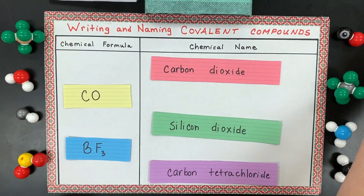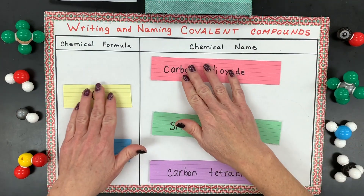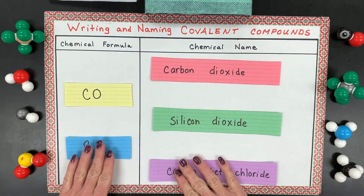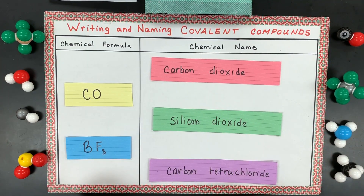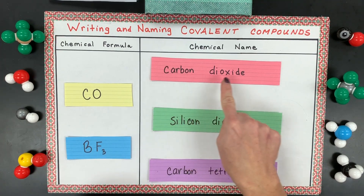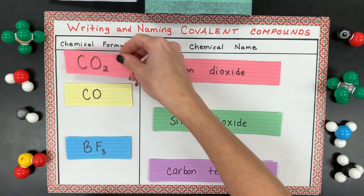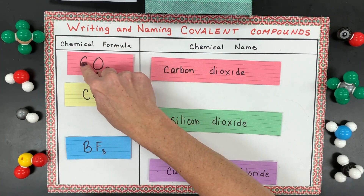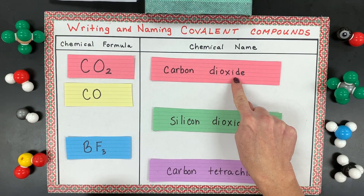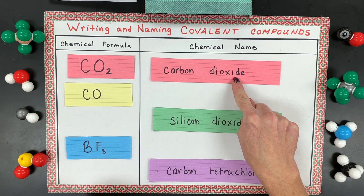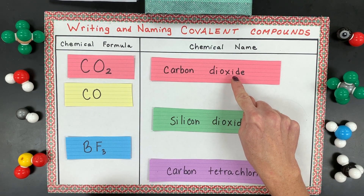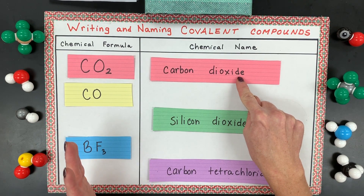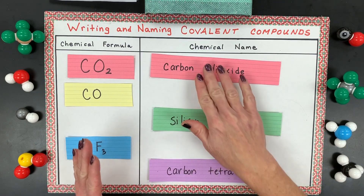Let's go through the first set of examples — write those down if you need to, then pause the video. The first one: carbon dioxide is one carbon and two oxygens. The second element, a non-metal, is written like it's an ion, but it's not actually an ion.